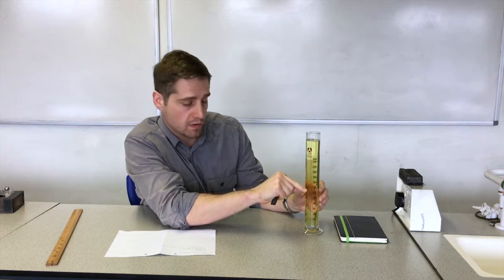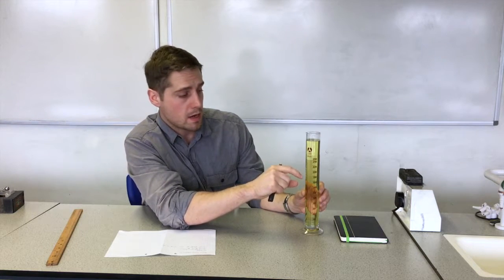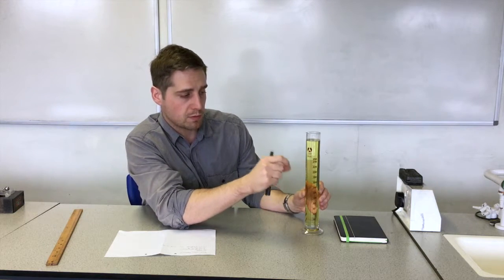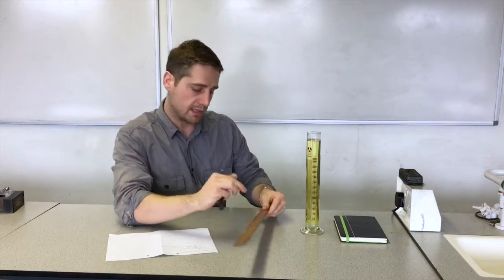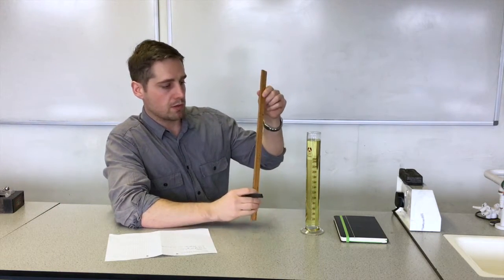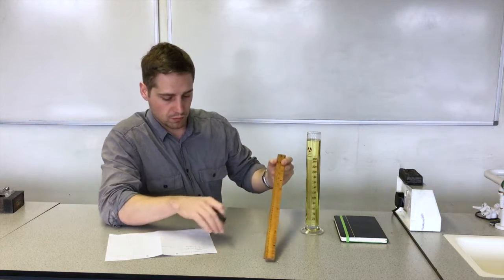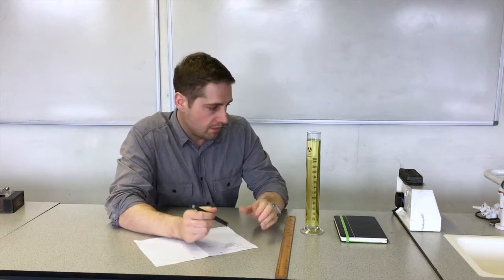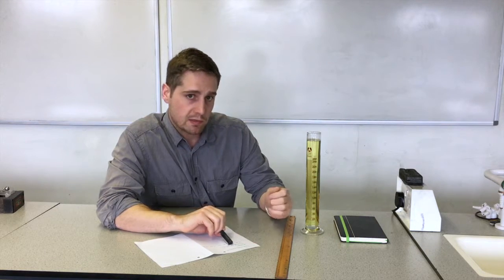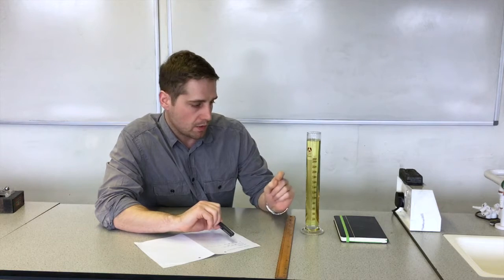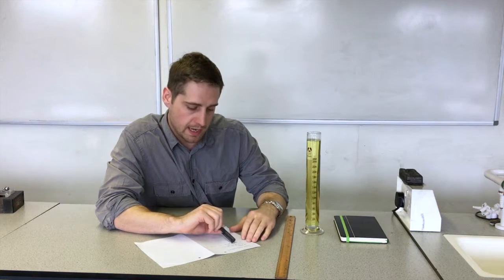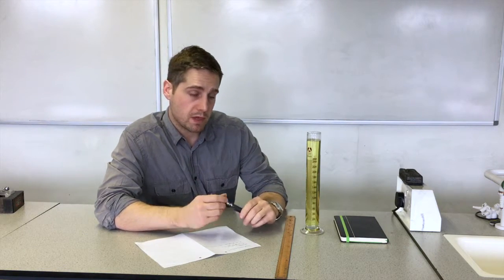I'm going to use the scale markings on the measuring cylinder to do that. Because these don't correspond with length measurements but volume measurements, I've calibrated them by measuring them with a half meter rule. So my actual calibration came out as 40 of these small scale markings with 62 millimeters, so each one scale marking here is 1.55 millimeters.